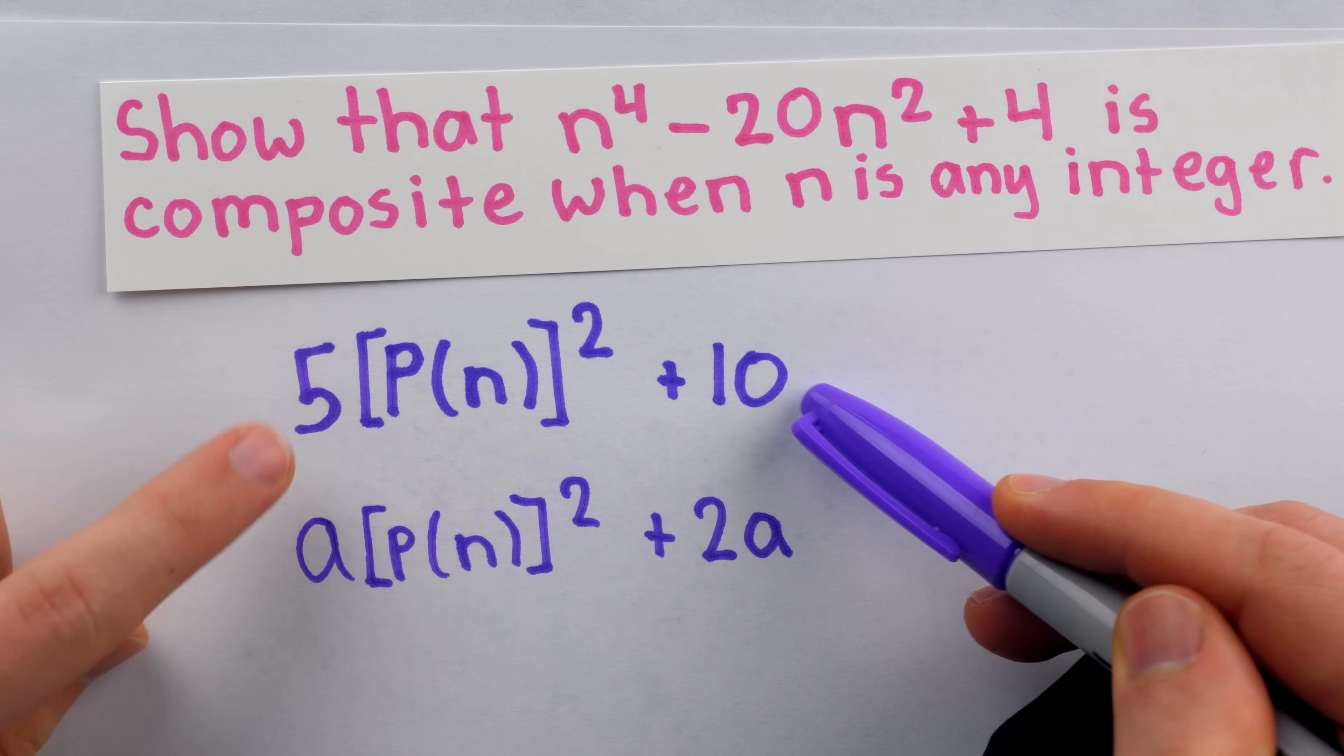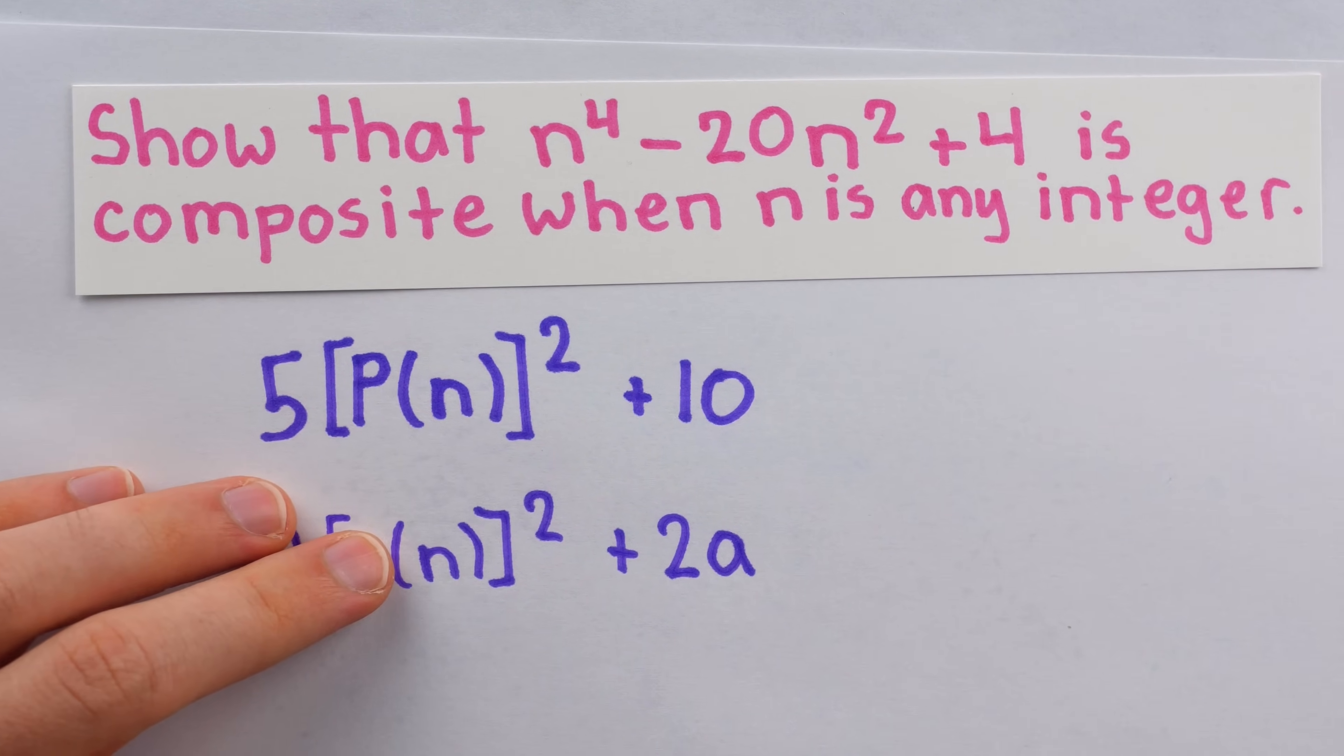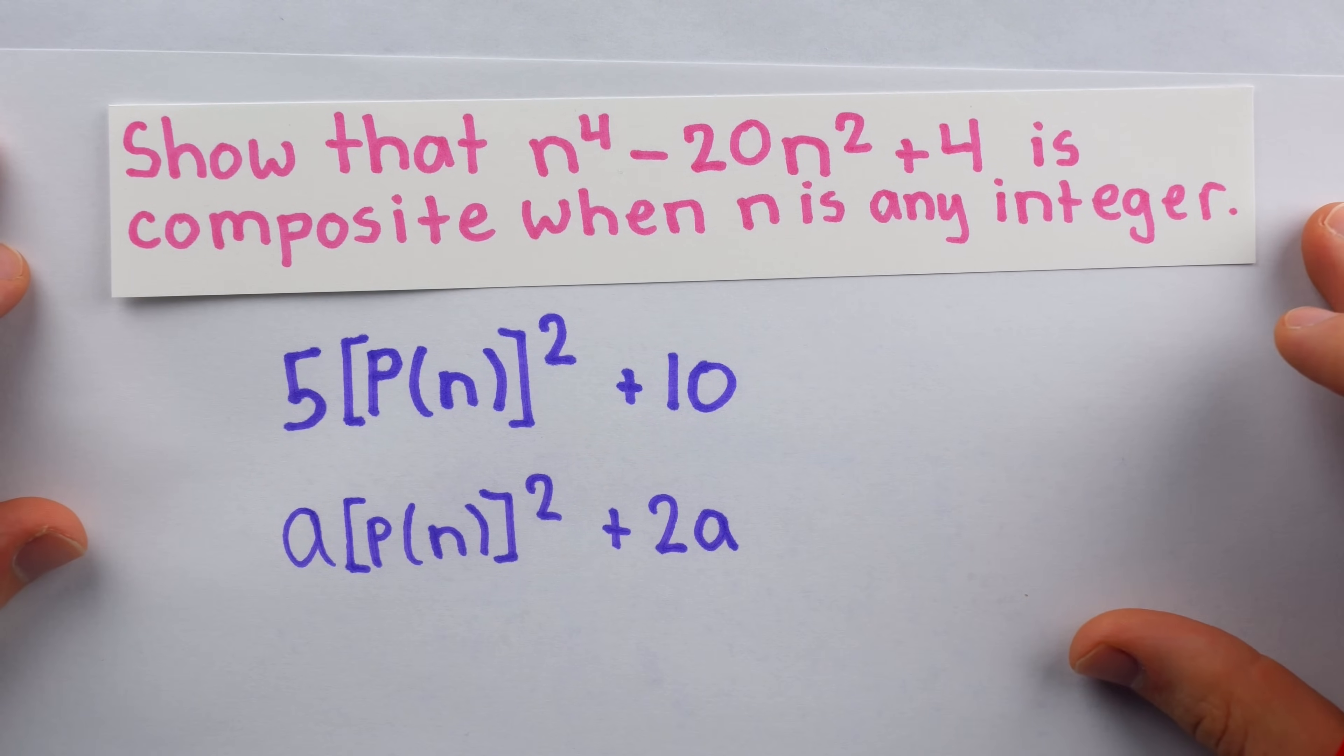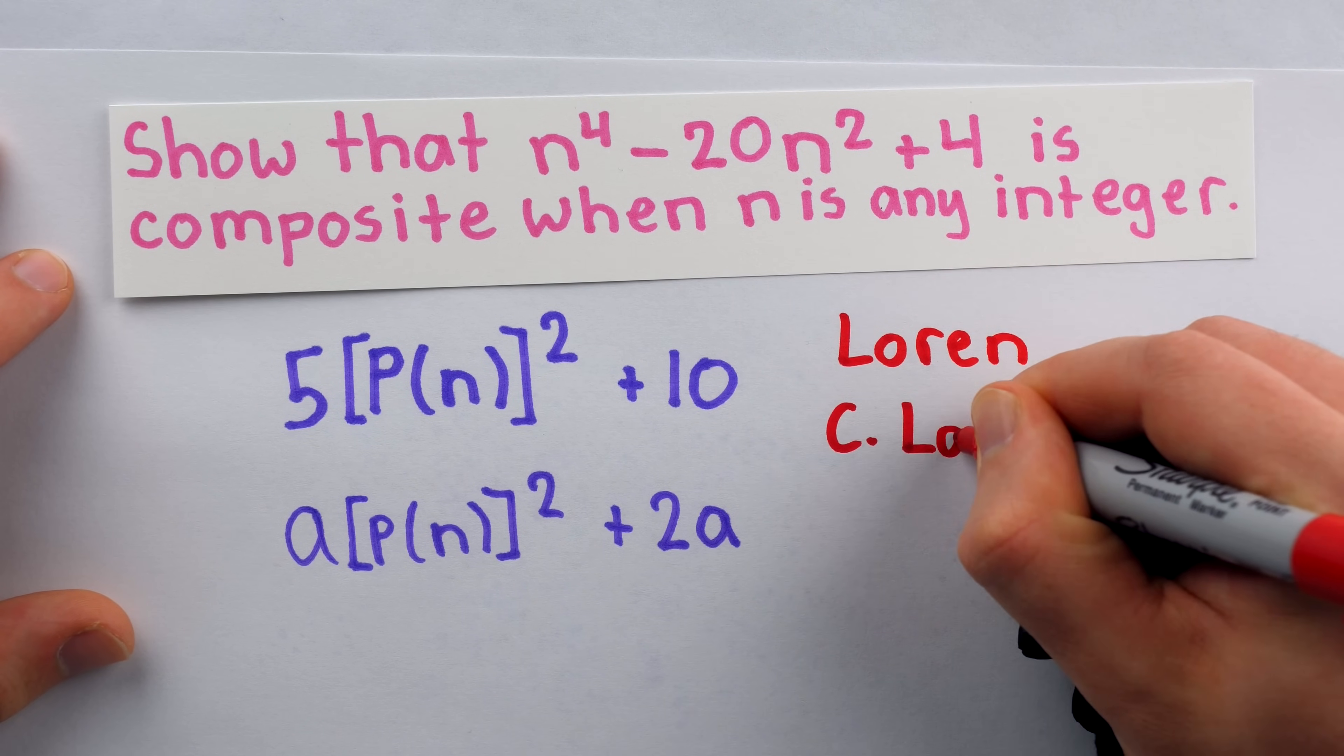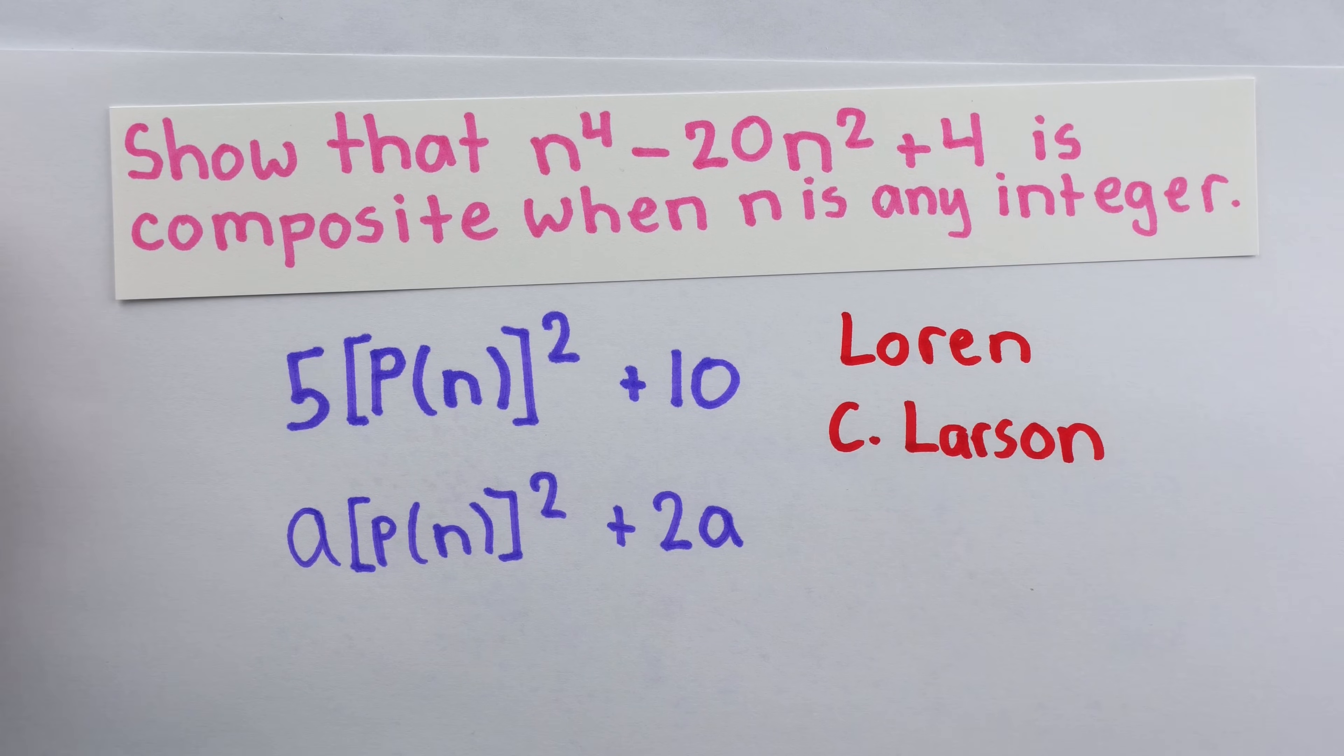Though it's pretty easy to see why these polynomials would always give composite numbers, it's not necessarily obvious that's the case for this one. So pause the video and give the problem a try if you like. This problem is from Problem Solving Through Problems by Lauren C. Larson, not to be confused with Ron Larson, the author of several popular textbooks such as calculus.